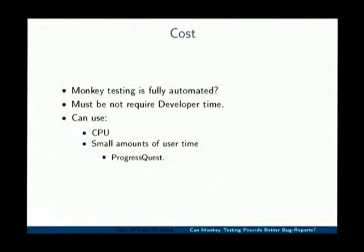Monkey testing in principle is a fully automated process, so the cost is really low. One thing I particularly wanted was not to require developer time from upstream projects — because developer time is very valuable, and if you want to test every great project, you can't keep every upstream project excited about it. CPU time is something a user can contribute very easily because desktops have huge amounts of unused CPU time. And although users aren't willing to spend a year learning C, there's a small amount of time just to look at what the key test has done and then report a few bugs — that's probably quite reasonable.